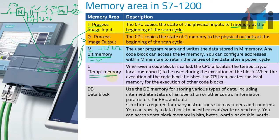Then you have temporary memory. When you have a lot of inputs and outputs, the PLC sometimes stores the result in a stack — a group of memory allocated for processing the information. We call it local memory or temporary memory. It is used during the execution of a block; when execution finishes, the CPU reallocates the local memory for other code blocks, so it gets cleared and can be used for another process.